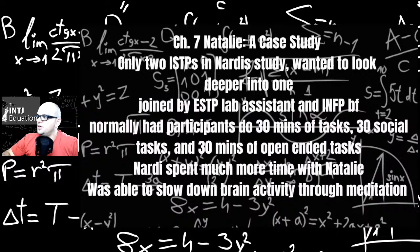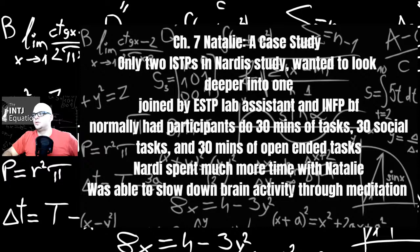Here's chapter 7. This is a case study on Natalie. There was only two ISTPs in the study, so he wanted to take a deeper look into them. His lab assistant was an ESTP. She had an INFP boyfriend, so an ESTP and INFP couple. That's an interesting dynamic there. Normally had participants do 30 minutes of tasks, 30 minutes of social tasks, and 30 minutes of open-ended tasks, but Nardi spent more time with Natalie. Was able to show brain activity, slow it down through meditation.